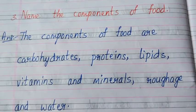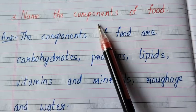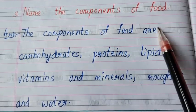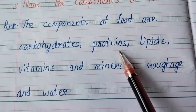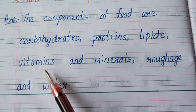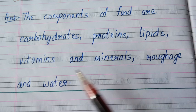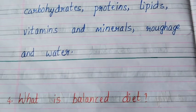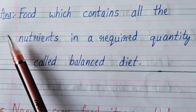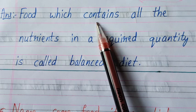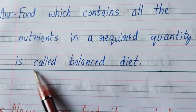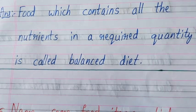Question number three: name the components of food. Answer: the components of food are carbohydrates, proteins, lipids, vitamins and minerals, roughage and water. Question number four: what is balanced diet? Answer: food which contains all the nutrients in a required quantity is called balanced diet.